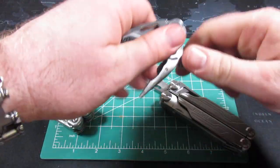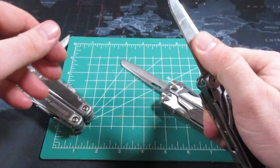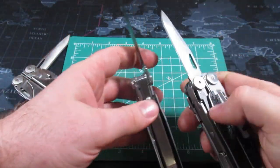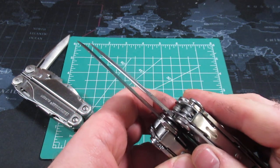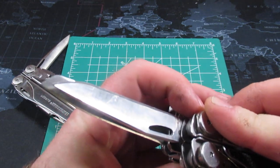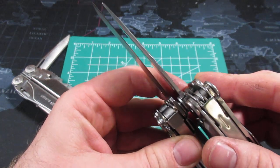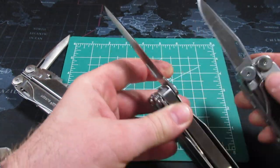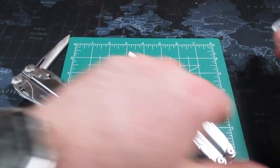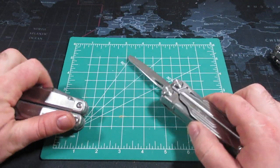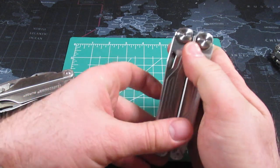And then when we compare the knife to the Leatherman Wave as well, there is a difference. You can tell it's definitely a little bit longer than the Leatherman Wave. And that will hold true with a lot of the other implements, all the implements on the outside as well.